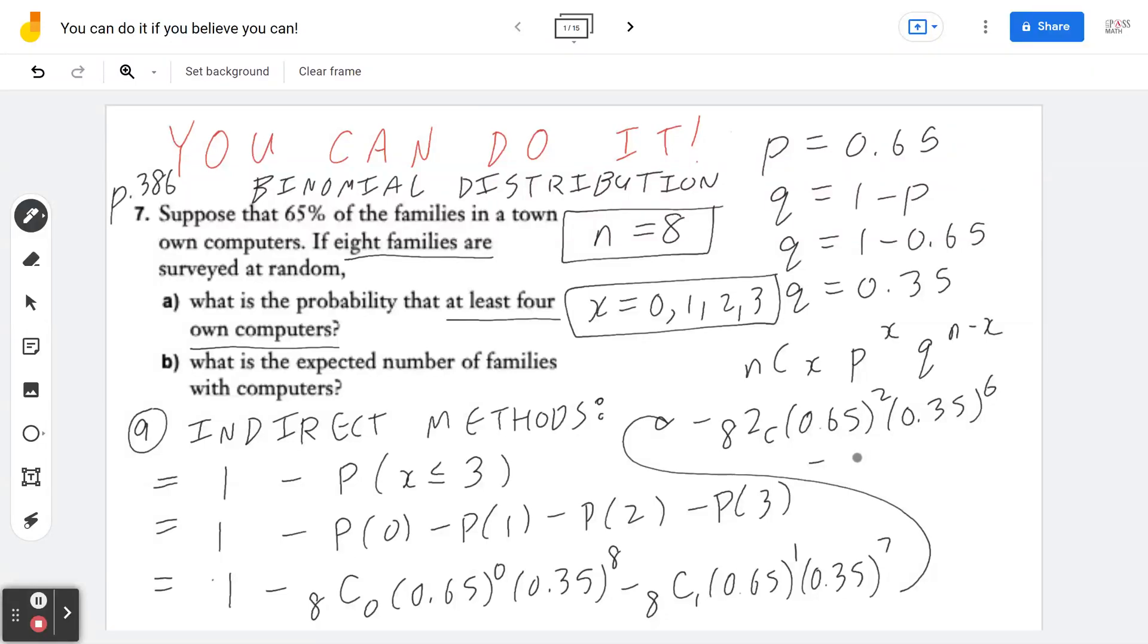Minus p of 3, which is basically 8 choose 3. I just realized I wrote this in the exact opposite sequence. It's 8 choose 2. Let's try again. 8 choose 2. This is 8 choose 3, 0.65 to the power of 3 times 0.35 to the power of 8 minus 3, which is 5.